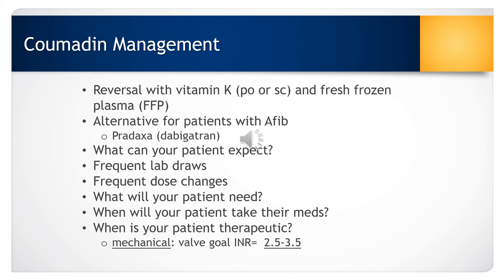The INR level needs to be within a therapeutic range. For someone with a mechanical valve, the goal INR is typically between 2.5 and 3.5 — much higher than someone without a valve. When the INR is in that range, it is called therapeutic. If it is below that range, it is sub-therapeutic, and if above that range, it is super-therapeutic. A patient who is super-therapeutic is at higher risk for bleeding, while a patient who is sub-therapeutic is at risk for clotting.